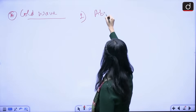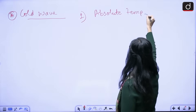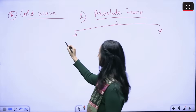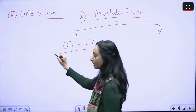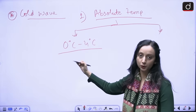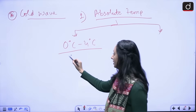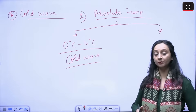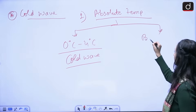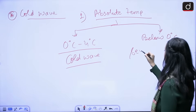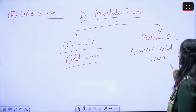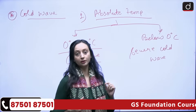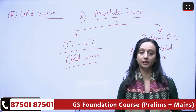The first set of conditions is around the absolute temperature. If the temperature of an area — talking about plain areas — is between 0°C to 4°C, we say that area is experiencing a cold wave. If the same area is experiencing a temperature below 0°C, then that is a severe cold wave. So if the temperature is between 0°C and 4°C it is a cold wave; if it is below 0°C it is a severe cold wave.